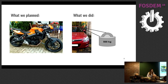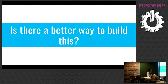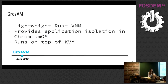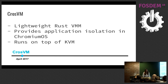We naturally ask ourselves, is there a better way to build this? And of course, there is — we can build it from scratch, but that takes a lot of time. Moving to the technical side of the talk, this is similar to what CrossVM did about two years ago. Instead of using an existing VMM, they decided to build their own VMM as a lightweight VMM written in Rust. CrossVM runs on top of KVM and is used for providing application isolation in Chromium OS.